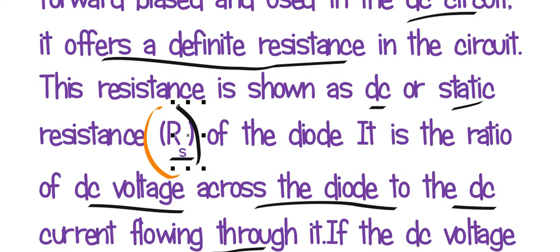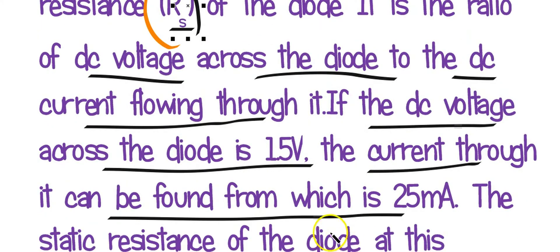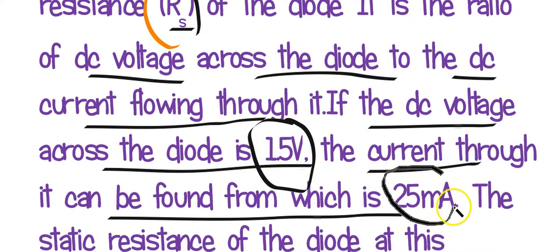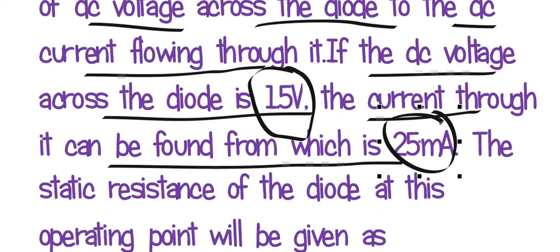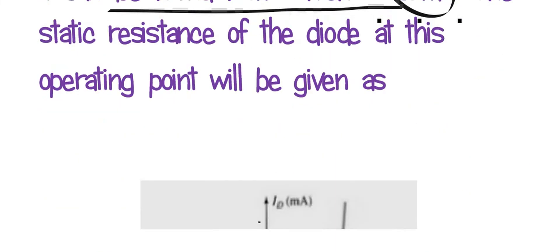What is the definition of resistance? Very simple — voltage divided by current. At any particular point, let the voltage be 1.5 volts and the current at that point be 25 milliamperes.